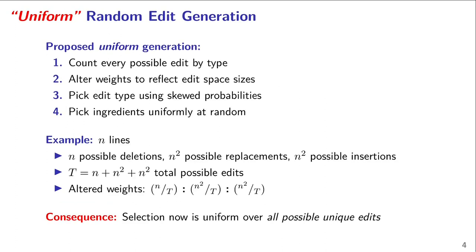To avoid that, we propose a different way to generate GI edits. First, we count all possible edits. With n lines, there are n possible deletions, n-squared possible replacements, and n-squared possible insertions — totaling n plus 2n-squared possible edits. We then adjust the weight for sampling each edit type so that every possible edit has the same probability of being generated. Instead of one-third each, we use n over the sum, n-squared over the sum, and n-squared over the sum respectively. This ensures no edit space is overrepresented due to having fewer possible edits.